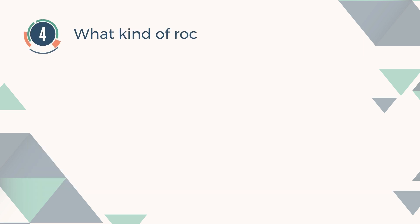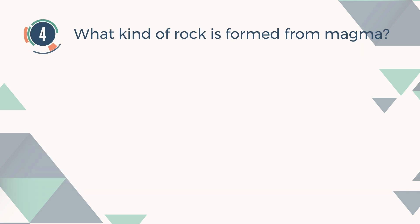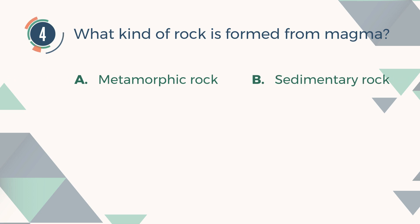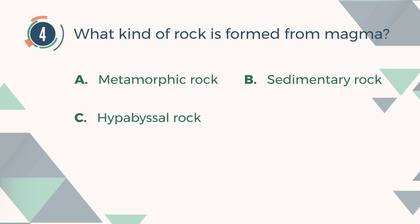Number 4. What kind of rock is formed from magma? A. Metamorphic rock. B. Sedimentary rocks. C. Hypabyssal rock. D. Igneous rock.